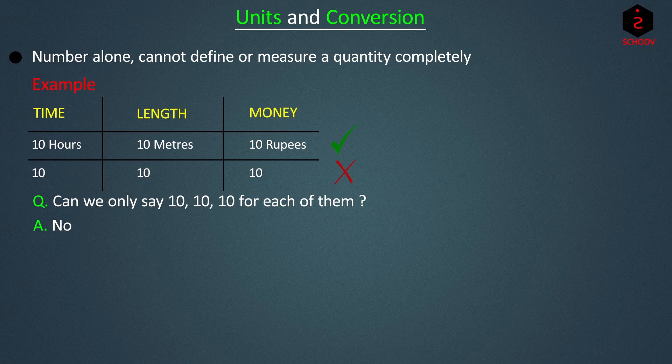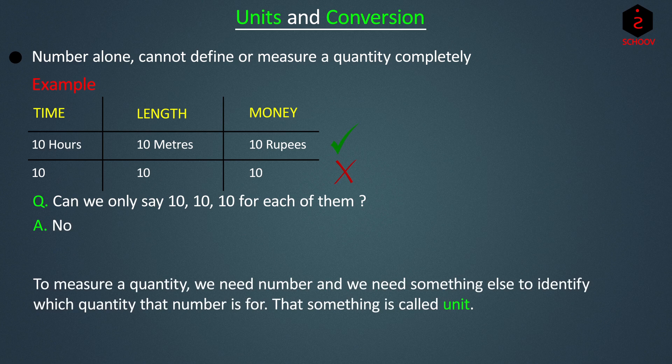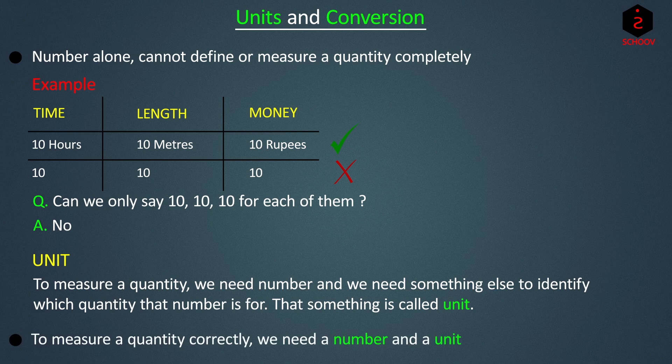So, to measure a quantity, we need a number and we need something else to identify which quantity that number is for. That something is called a unit. To measure a quantity correctly, we need a number and a unit.